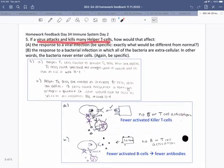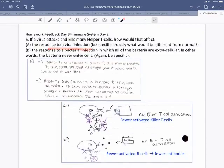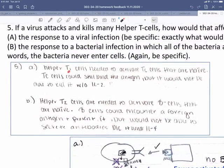Finally, if a virus attacks and kills many helper T cells, how would that affect the response to a viral infection? Helper T cells are needed to activate the killer T cells that are naive. Those T cells could still bind the antigen. But without helper T cells, if it's lost a lot of helper T cells, it needs the helper T cells to activate it. And so what we've lost is some of the ability to activate killer T cells.